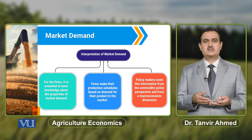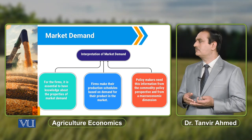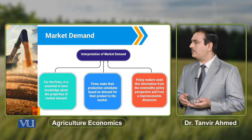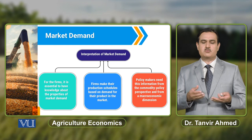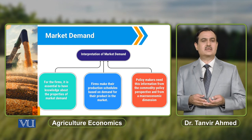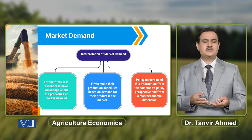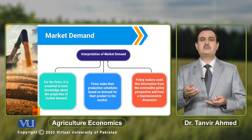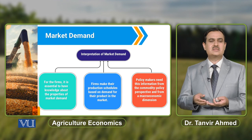Firms are very much concerned about the nature of the elasticity of the commodity they are selling in the market. At the same time, market demand is very important for policymakers because it is the information they use for the formulation of policies about products being sold in the market. For example, if the commodity under consideration is a necessity item, policymakers will try to keep the prices of that particular commodity relatively low compared to other items in the market.